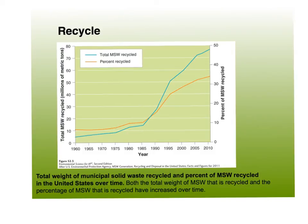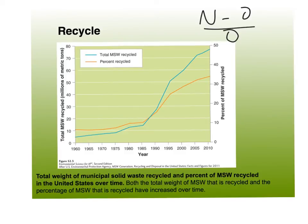Looking at this double-y graph, you have to look at the key in the corner. The percentage we've recycled has increased since the 1960s to now - about a third. The total stuff recycled has also increased in rate. But this isn't necessarily always good news because we have also produced more trash per capita, so that's not such a good thing.